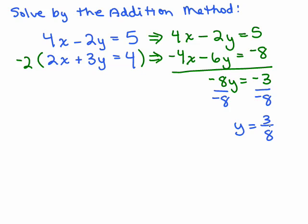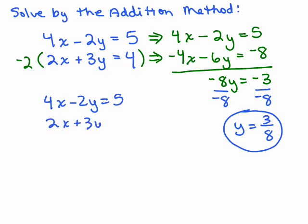Now normally what we do is go back to one of the original equations, plug in 3 eighths for y, and then solve for the other variable. But you know what, that's not a lot of fun because we have this fraction to plug in for y and then we're going to have to deal with fractions. So it's actually easier to find your x coordinate, the value of x, by doing the problem again eliminating the y values so you'll be able to solve for x. So we do know what y is, we're going to have part of the ordered pair so far. Now we're going to take the same original two equations, 4x minus 2y equals 5 and 2x plus 3y equals 4.